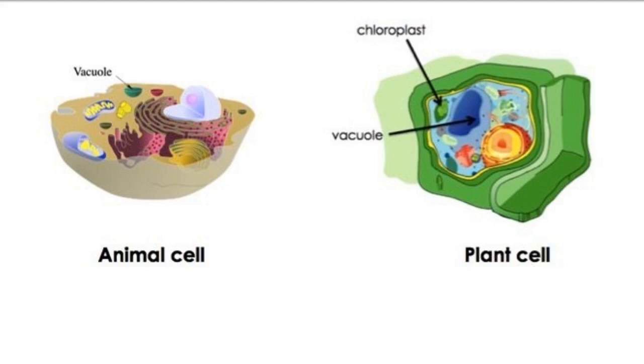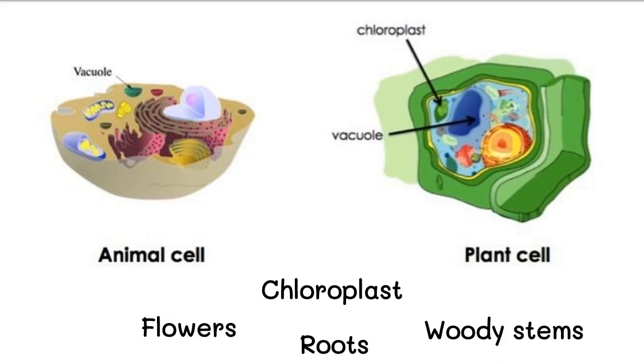Cells of the green parts of plants, especially the leaves, contain another very important organelle, the chloroplast. Cells from the part of a plant that are not green, such as the flowers, roots, and woody stems, have no chloroplasts.